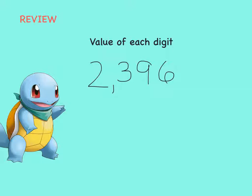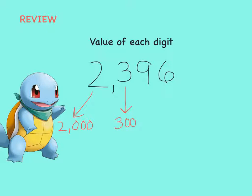The value of each digit is how much it's worth. The two in the thousands place has a value of 2,000. The three in the hundreds place has a value of 300. The nine in the tens place has a value of 90. The six in the ones place has a value of 6.